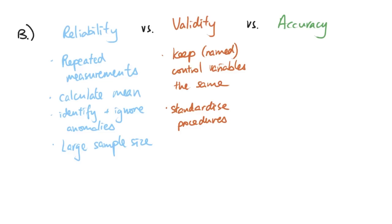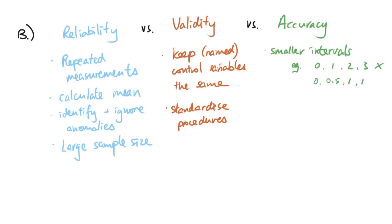Finally, accuracy is about how close your measurements are to the actual true value. There is no way to be absolutely sure your data is 100% accurate, but there are ways to increase it. One way is to use smaller intervals — for example, instead of using 0, 1, 2, and 3 for your concentrations, use 0, 0.5, 1, 1.5, etc. By using smaller intervals you collect more data points in between, giving you a value closer to the actual true result.